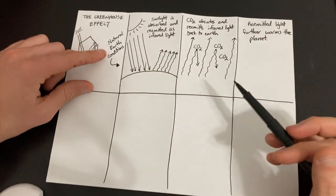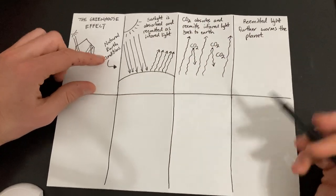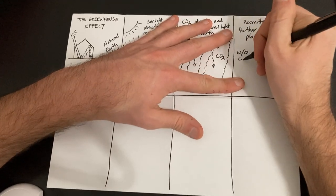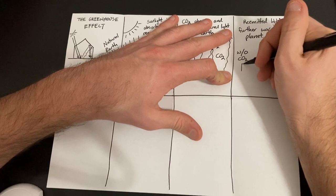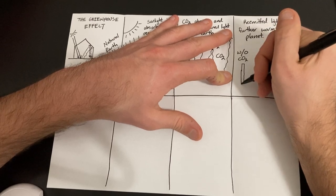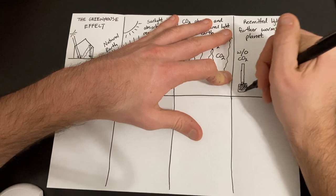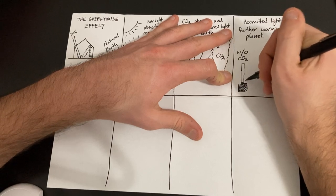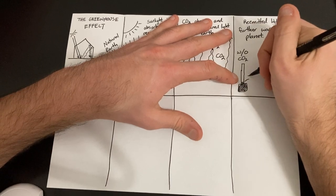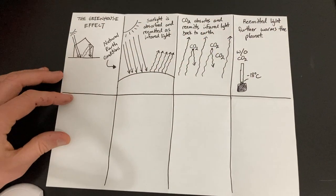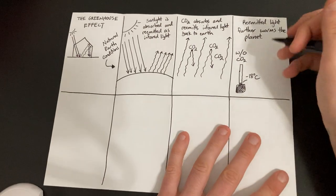So these natural Earth conditions, this is actually a good thing. Without, so this is going to be without CO2. I'm going to draw a little thermometer here. If there was no CO2 at all, the average temperature on Earth would be about negative 18 degrees Celsius. It's pretty dang cold.